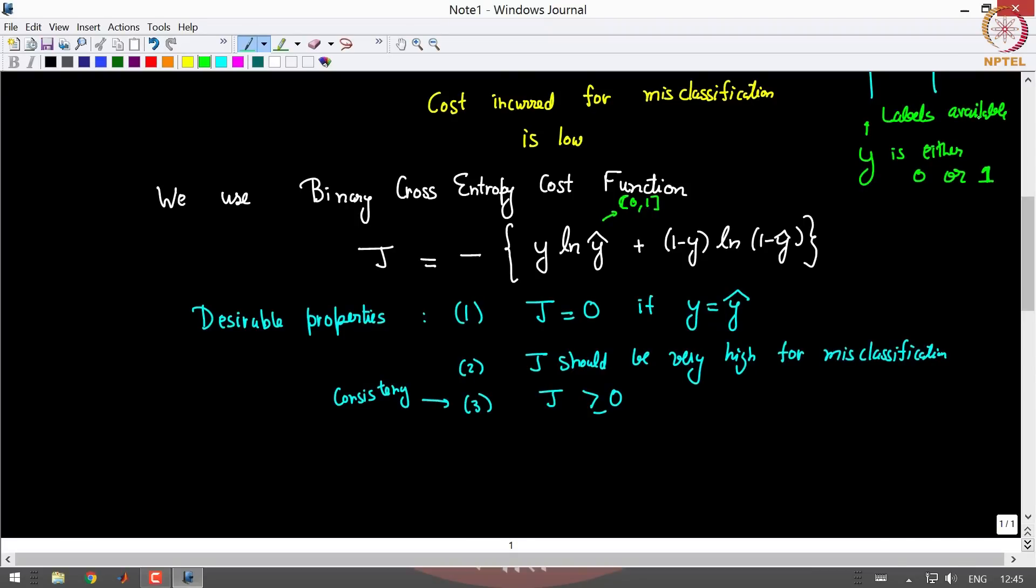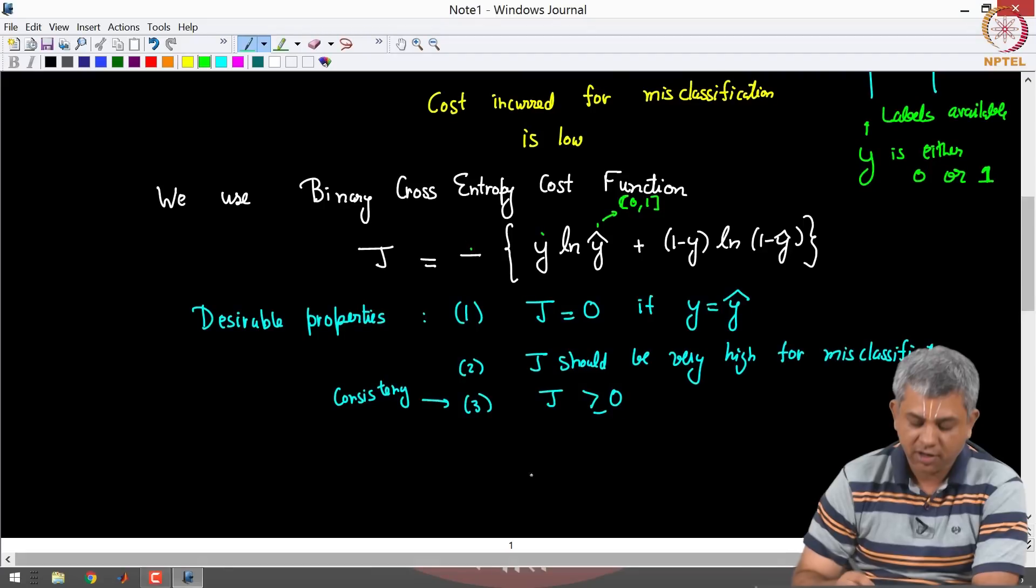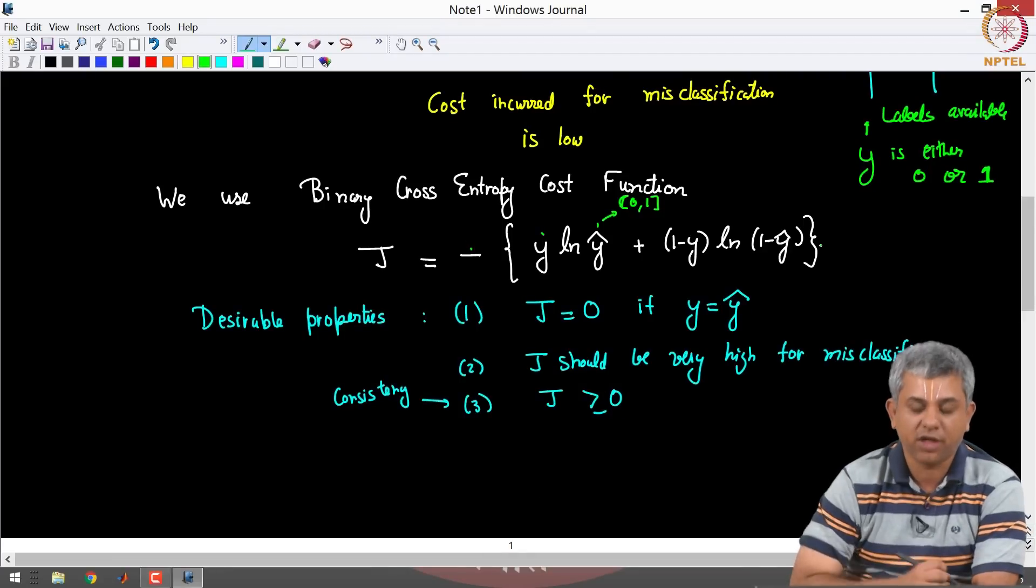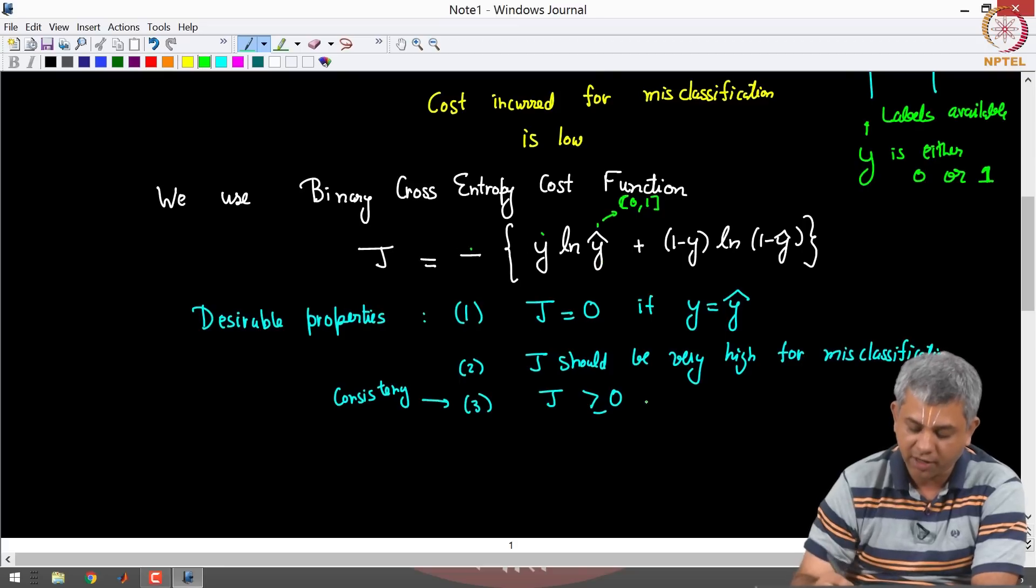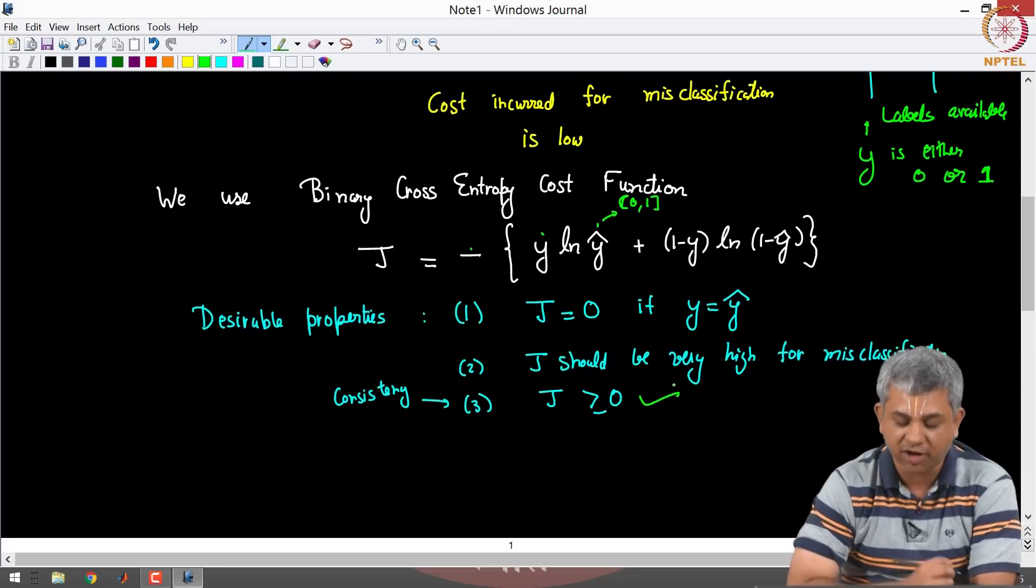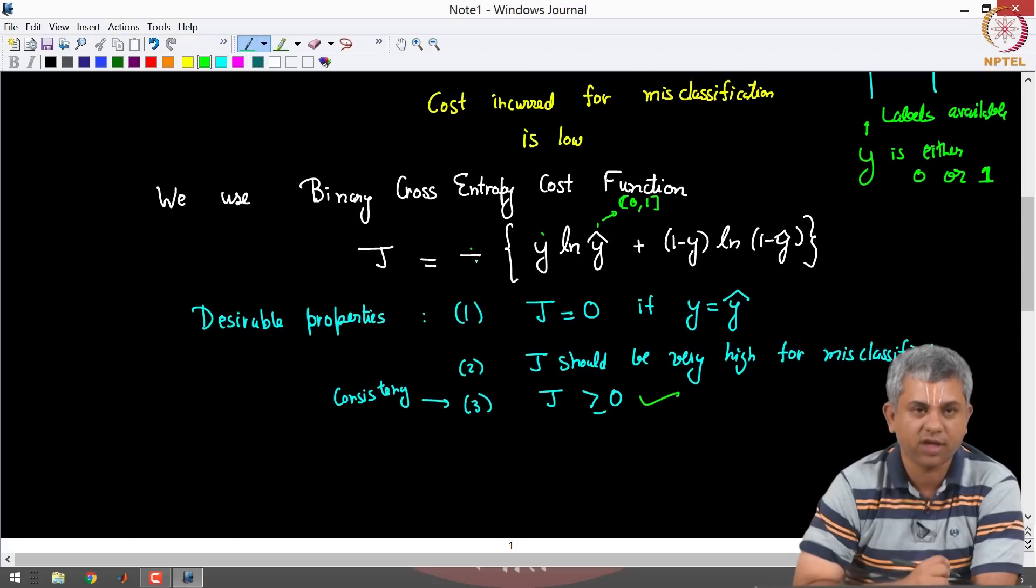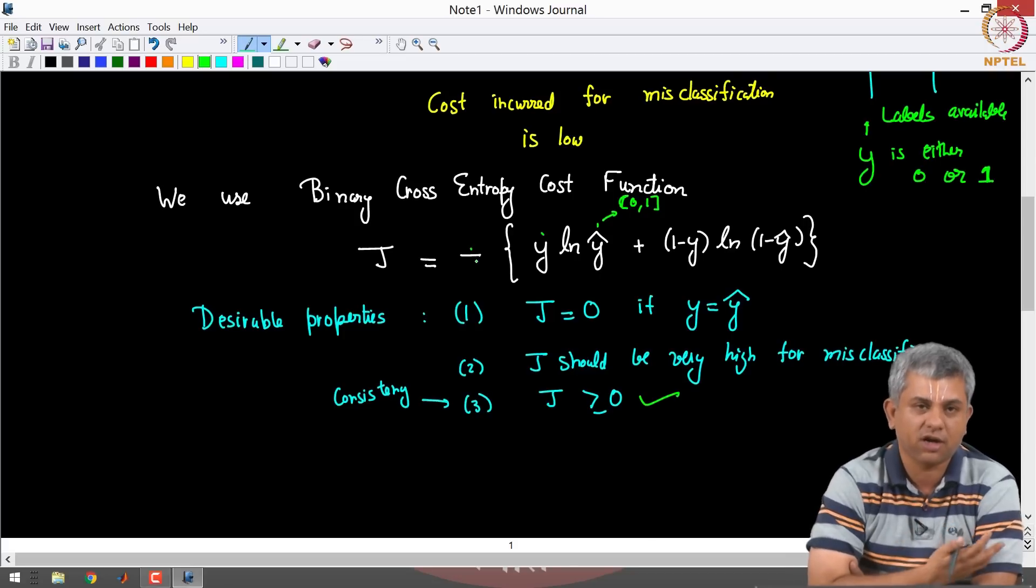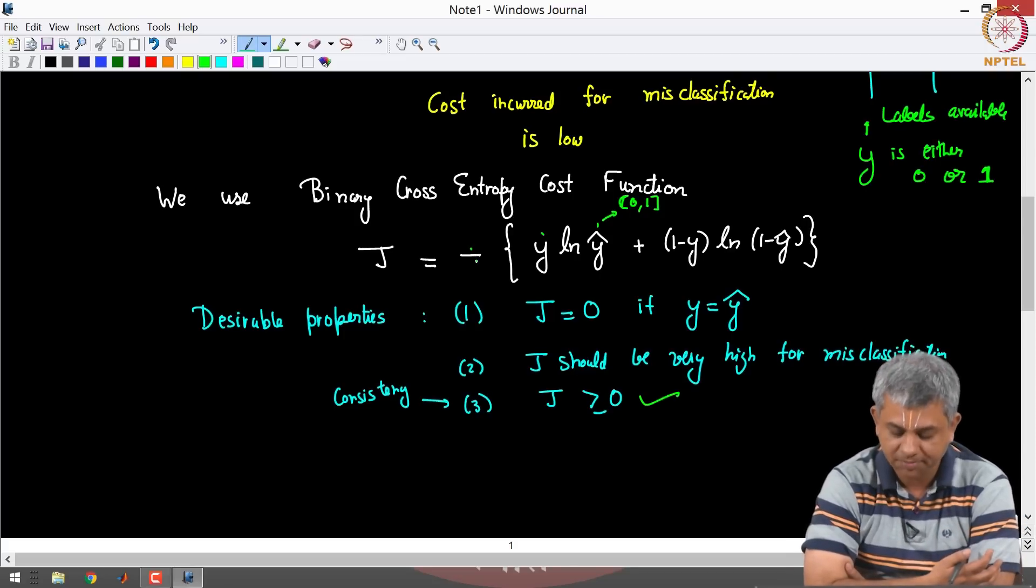So Y is either 0 or 1. Y hat is between 0 and 1. Therefore ln of Y hat is going to be negative. Y is going to be either 0 or 1. So this whole term is negative. Similarly this term is also negative and that is why you have this minus sign, so that the whole term actually becomes positive, negative multiplied by negative, this is positive. So this is the function of the minus sign. It is just to make J positive so that it is consistent with least squares. That is the first.